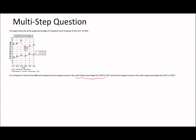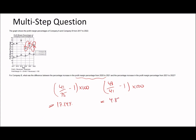The percentage increase from 2020 to 2021: that's 41 over 35, minus 1, times 100, which is 17.14 percent. For 2021 to 2022: 43 divided by 41, minus 1, times 100, which is 4.88 percent. The difference between these two percentage increases is 17.14 minus 4.88, which gives approximately 12.26 percent.